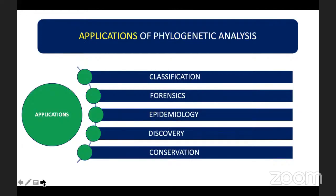Phylogenetic analysis is used in classification and identification of new species. It can aid in assessing DNA sequence evidence in paternity testing, and it is used to identify pathogens and source of transmission. It can also be used to discover novel bioactive compounds with industrial, environmental, and pharmaceutical applications, and it can help inform conservation policy about which species are about to become extinct.